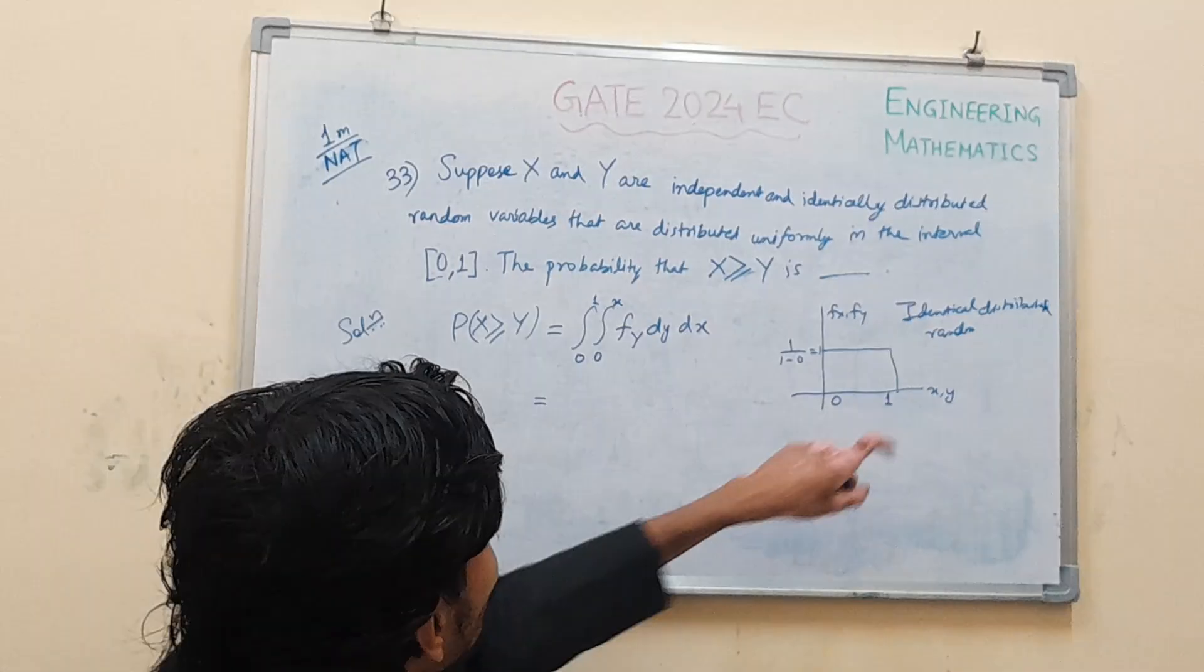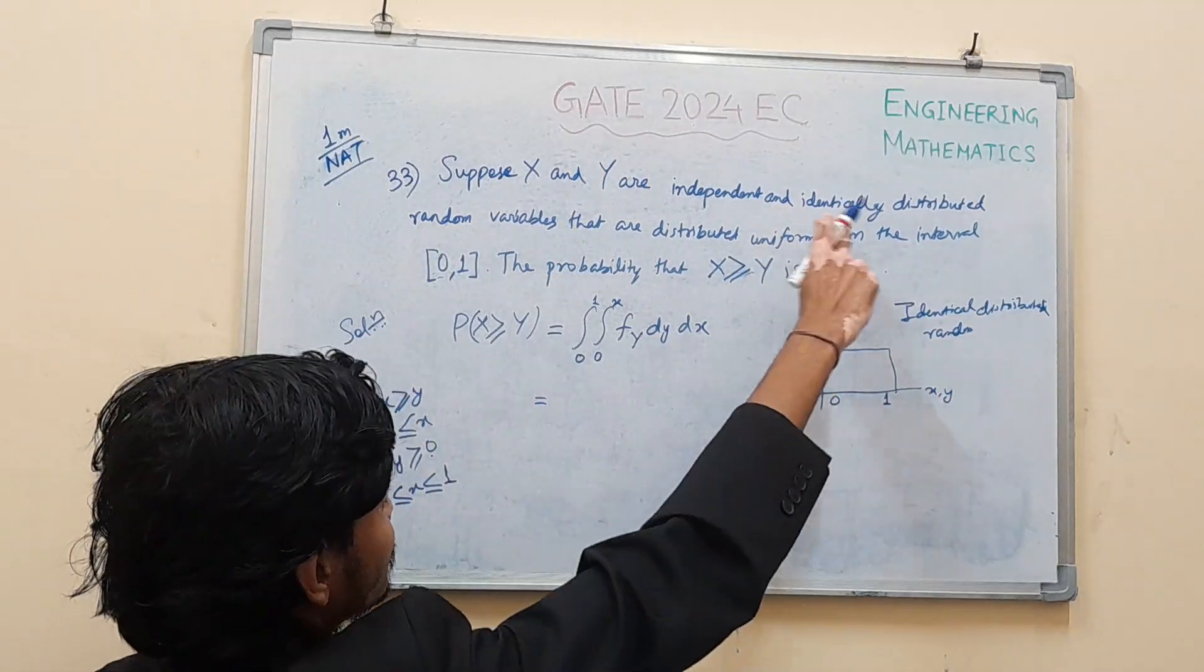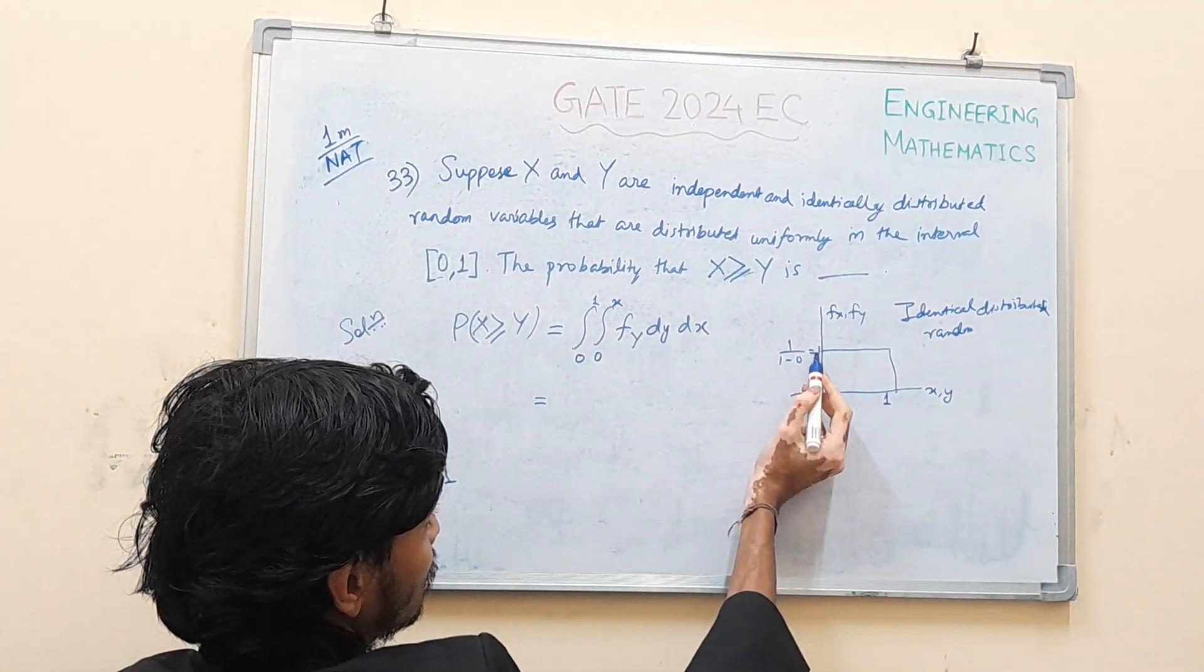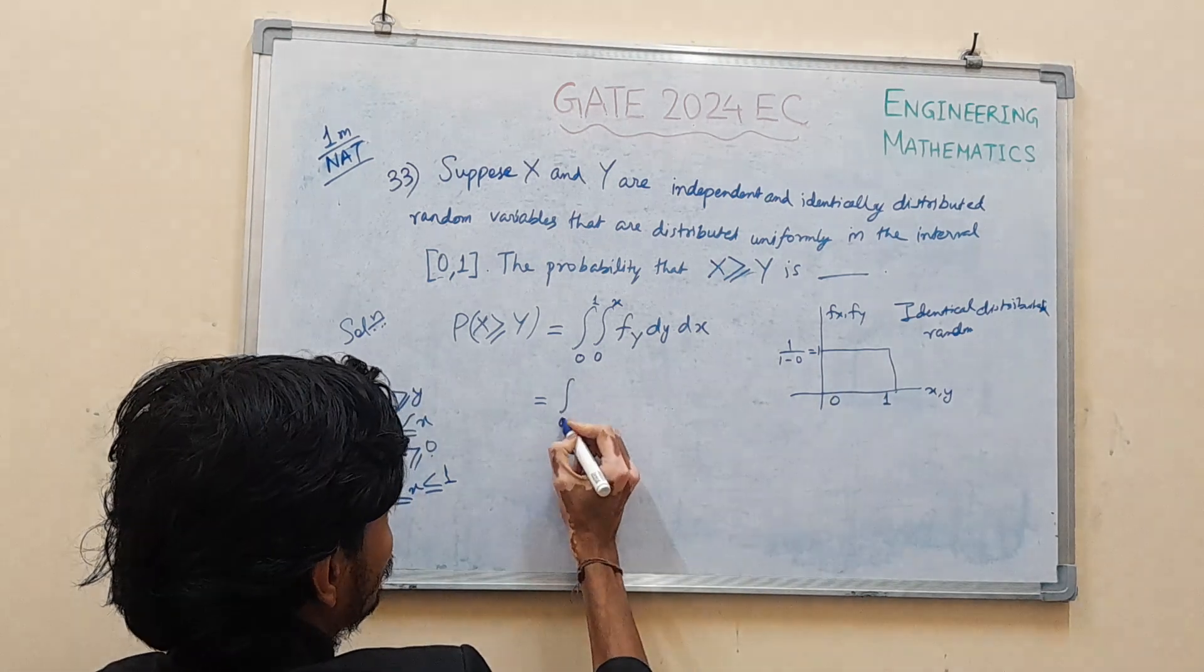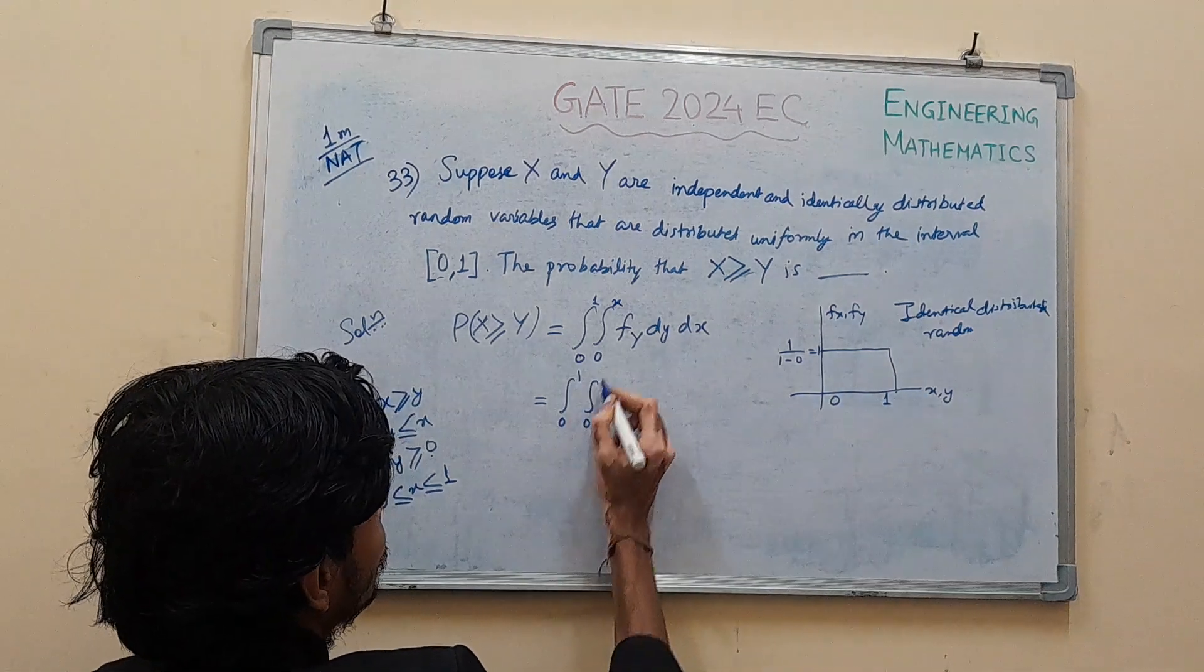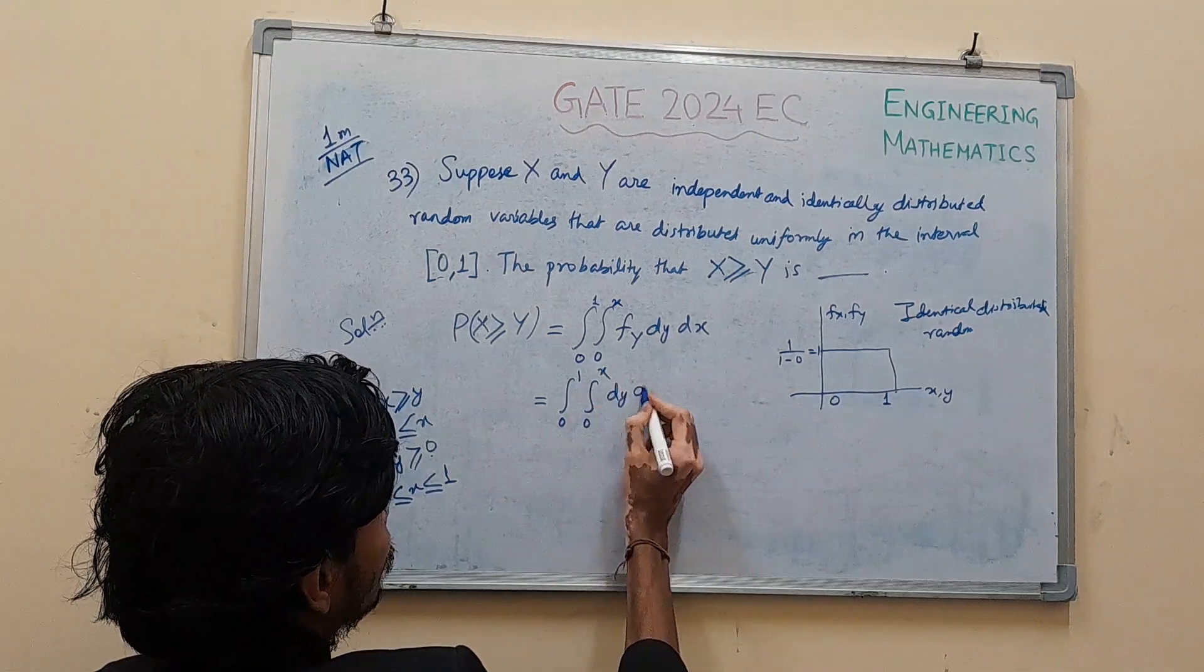f of y will be what? In the integral 0 to 1. As it is uniformly distributed, the function value will be constant at 1. So we will simply get integral 0 to 1, integral 0 to x, dy dx.